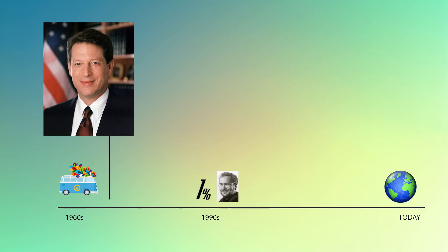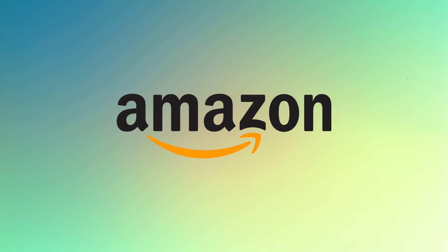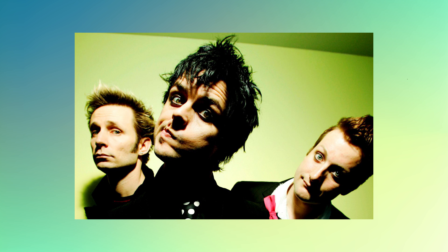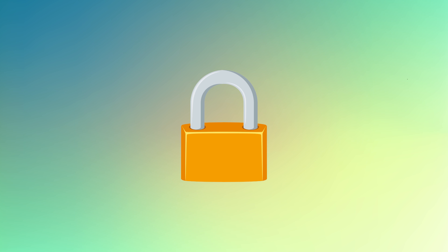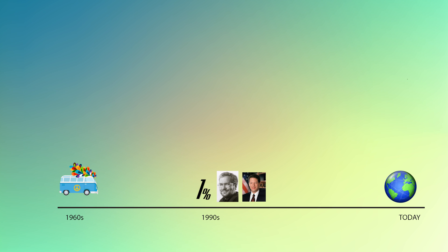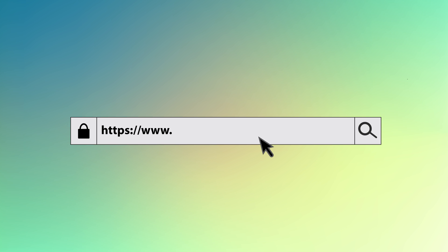In 1993, Al Gore helped turn the government-controlled internet into the privatized internet that we know and love today. Amazon, AOL, ZomboCom, and every dot-com in between popped up. There was a September that never ended, and suddenly there was a need for encryption — because shopping. Come 1994, the dominant web browser of the time, Netscape, adopted SSL, and encrypted web pages were born with the now-familiar HTTPS.